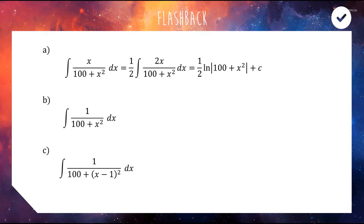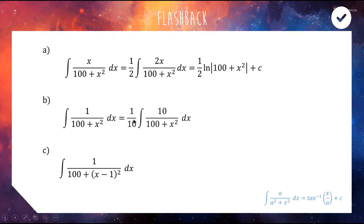The next one you would see in Extension 1 because in order to integrate this we need to use inverse tan. Our standard integral on your reference sheet is: the integral of a over (a² + x²) integrates to inverse tan of (x/a). So we just need to put a 10 on the top — put a 10 out the front — and now this becomes inverse tan of (x/10), with a 1/10 out the front and plus c on the end.